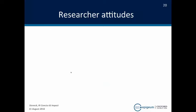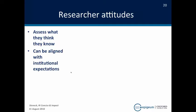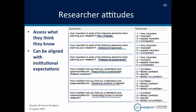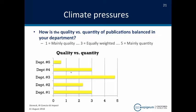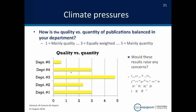The idea here is you're not just giving training, but you're getting data back that helps you actually improve the training — go into departments, find out what's going on. We're also collecting data on researchers' attitudes: what do they think, what do they know, can these be aligned with institutional expectations? So we ask, how important are each of the following elements when planning your research — protocol, institutional approvals, professional agreements, responding to questionable research, conducting human or animal research? We also ask confidence questions, questions about quality and pressures — how is the quality versus quantity of publications balanced in your department? And we ask: are you confident that all of the research you have published is based on reliable evidence? What would you do if a department's confidence that their research was based on reliable evidence was not very high?